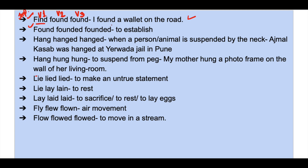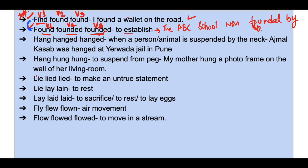'I found a wallet on the road' means I located a wallet on the road. For the second pair: found, founded, founded — here 'found' is V1, 'founded' is V2, and 'founded' is V3. Founded means to establish. For example: 'The ABC school was founded by Mr. Roy,' meaning it was established by Mr. Roy.